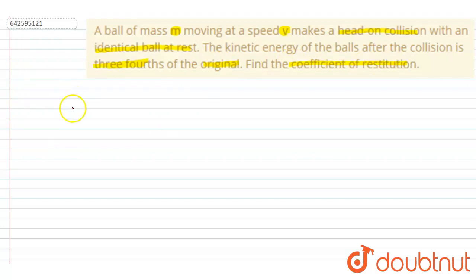So it is given that initially the m mass ball was moving with a velocity v, and it collides. Its collision is head-on. So after the collision, let's suppose they start moving with velocity v1 and v2.